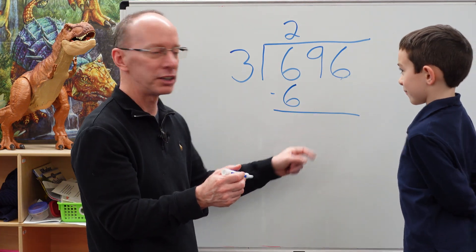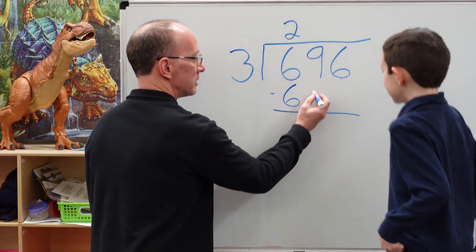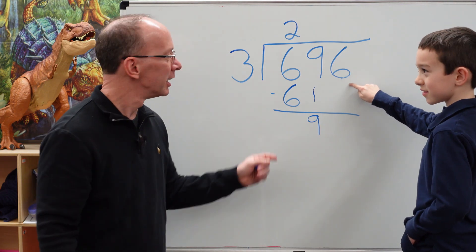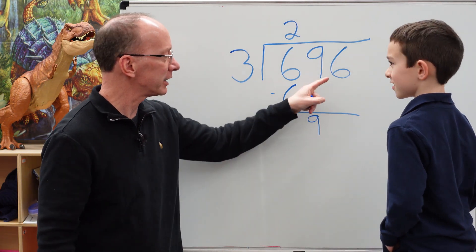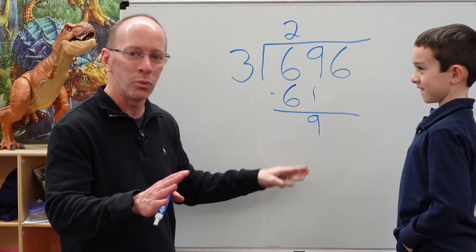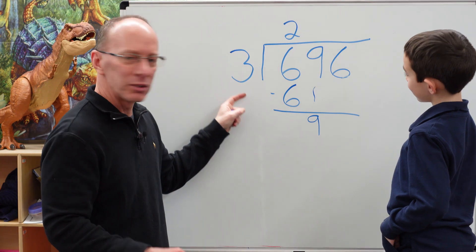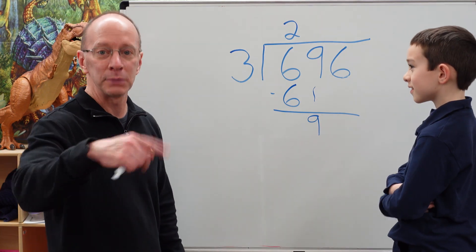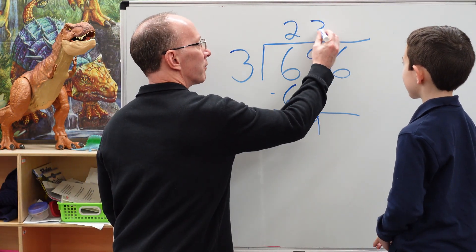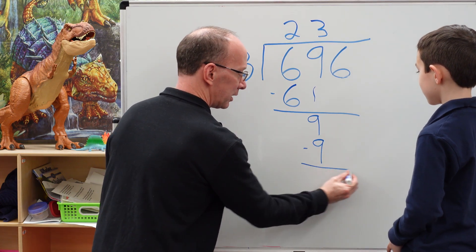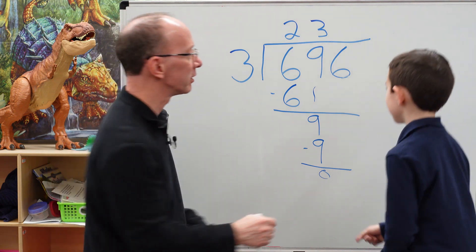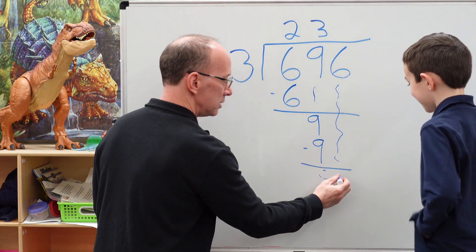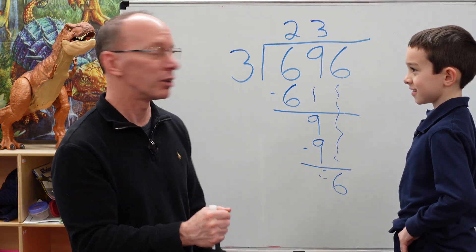Now we drop the next number down — can you do a little beatboxing while I'm dropping down? Drop the number down. Now, how many times can I put 3 into 9? Three. Three times three equals 9. I put 3 right here. Three times three equals nine. Subtract with a zero again, so we don't even really have to put that zero down. Drop it down — the beatboxing is optional, but sure makes it a lot more fun.